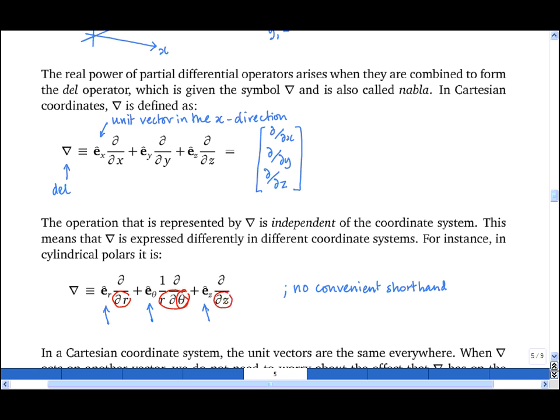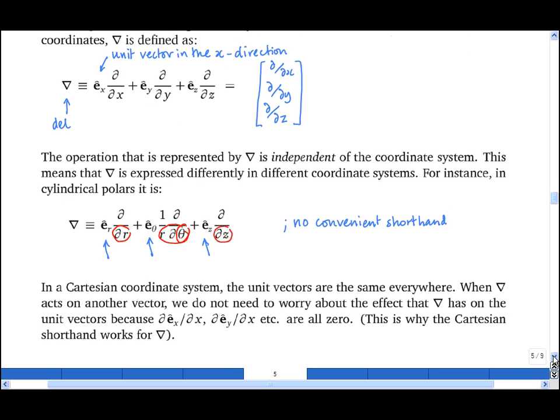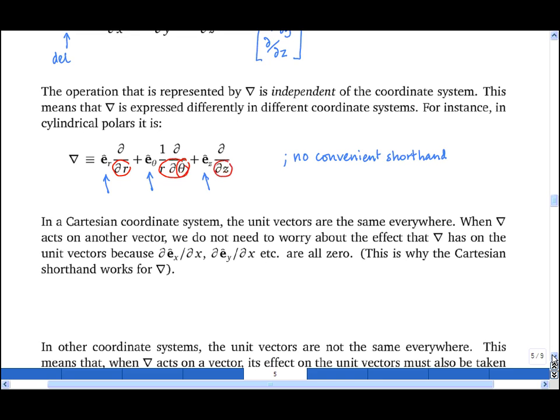Now there's no convenient shorthand in cylindrical polars, and if you try to use the Cartesian shorthand above for cylindrical polars or spherical polars, you'll get into trouble, and this is because in those coordinate systems the unit vectors change as you vary in space. So in a Cartesian coordinate system, the unit vectors, e-x, e-y, and e-z, do not vary in space.